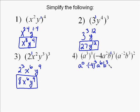And then the last one, it's going to be a to the negative 2 to the 2nd, so you multiply. Negative 2 times 2 is negative 4. And then b to the 3rd to the 2nd is 3 times 2, which is 6.